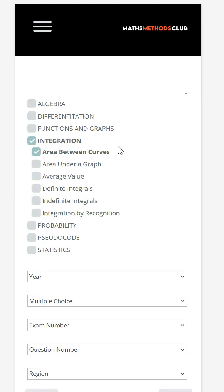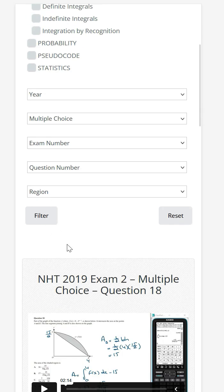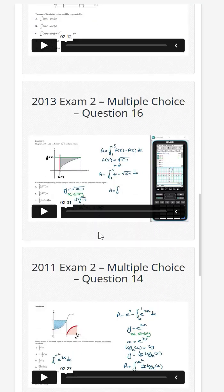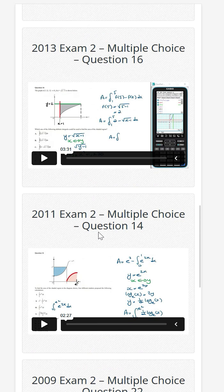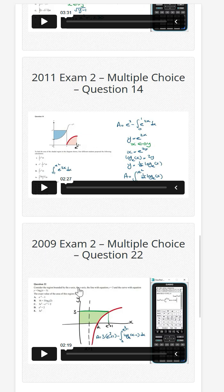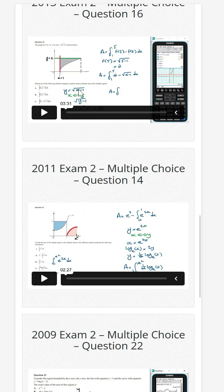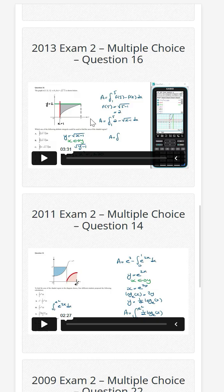Group the questions by area between curves under integration, select multiple choice and then click on filter, then scroll down to the last three questions, which is a similar question asked to this one here. We've got 2013 exam question, 2011 and 2009. All of these were pretty tricky, so give them a go and see if you can get them right.